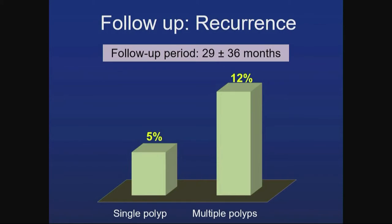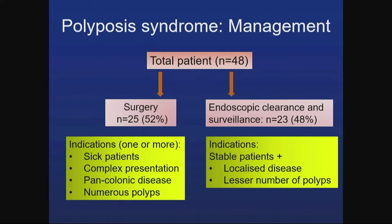In follow-up, 5% of single polyp patients had recurrence while 12% of multiple polyp patients had recurrence requiring polypectomy. For polyposis syndrome management, 42% were decided for surgical treatment and 48% were started on endoscopic clearance and surveillance. Surgical indications included sick patients, complex presentation, pan-colonic disease, and numerous polyps, while endoscopically managed patients were stable with localized disease and fewer polyps.